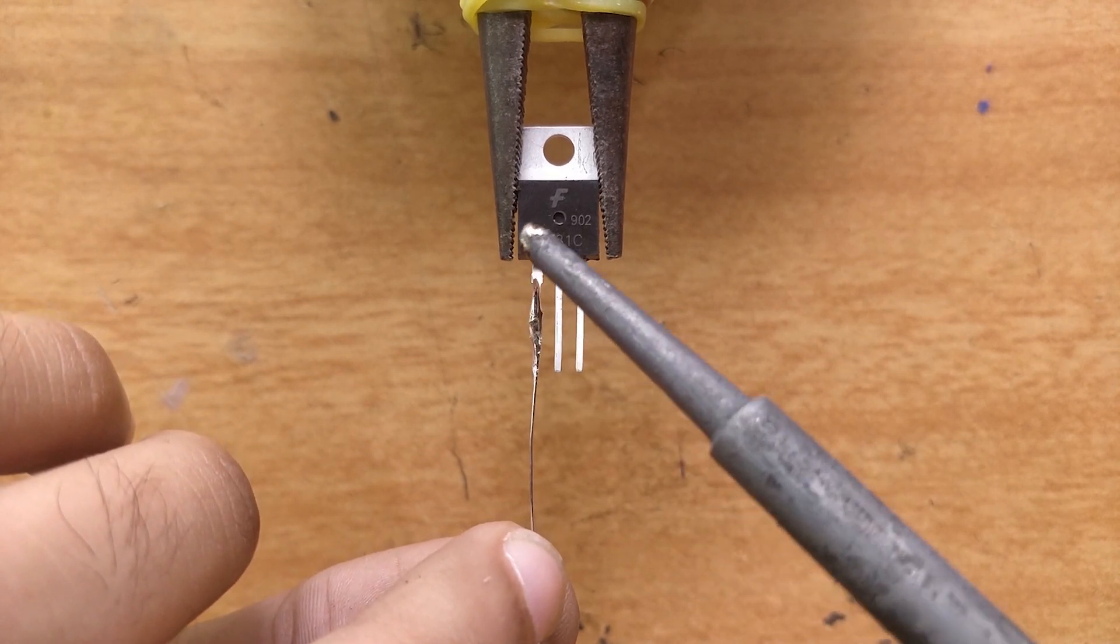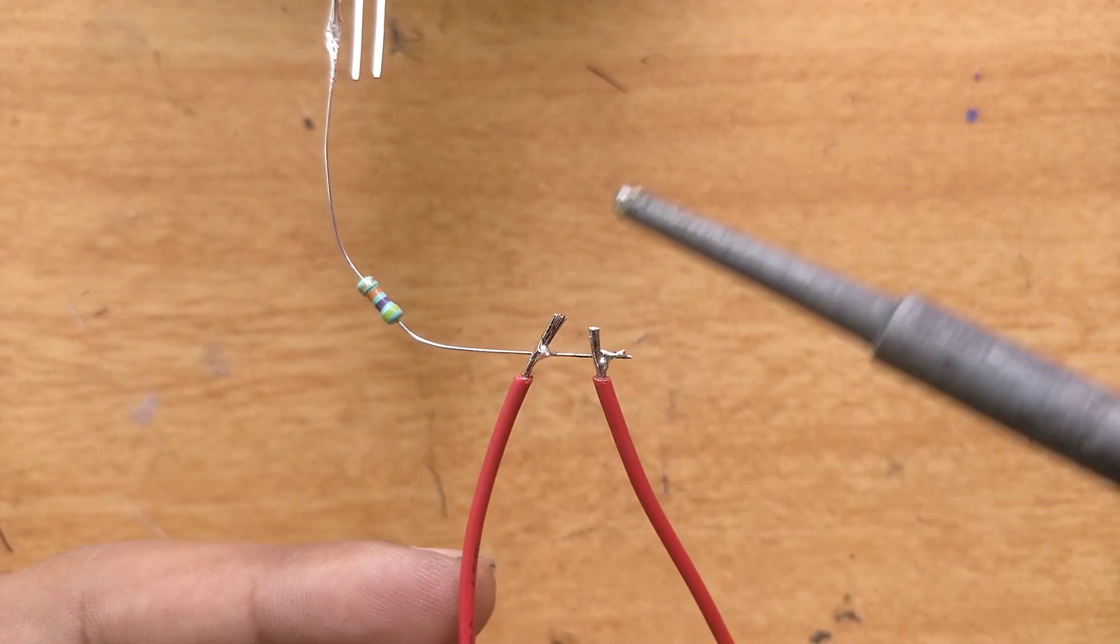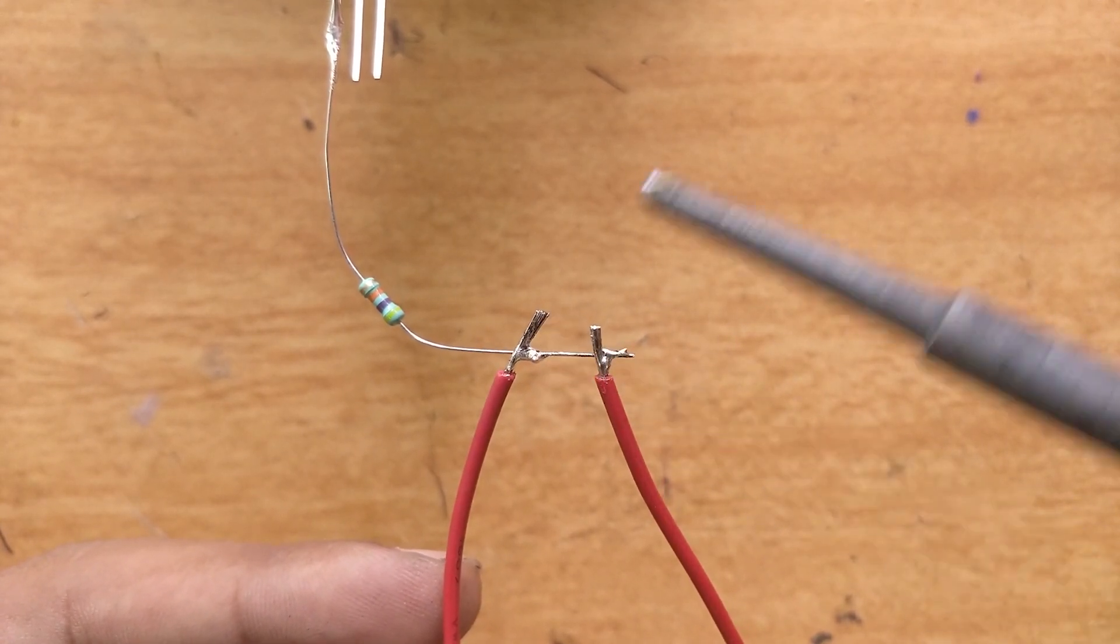First let us solder the 47 kilo ohm resistor onto the base of the transistor. Now attach two wires on the other end of the resistor and connect another wire onto the emitter of the transistor.